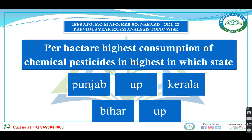Per hectare highest consumption of chemical pesticides — I'm not talking about overall fertilizers, only pesticides per hectare — in which state: Punjab, UP, Kerala, Bihar, or Haryana? Per hectare, highest consumption of chemical pesticides is in Punjab. Overall highest consumption of pesticides is in Maharashtra. Highest consumption of chemical fertilizer on a volume basis is in UP. Bio-pesticides highest consumption is in Rajasthan.